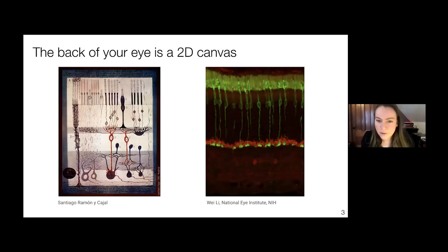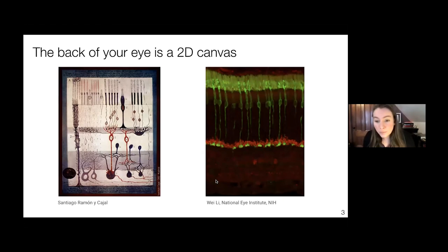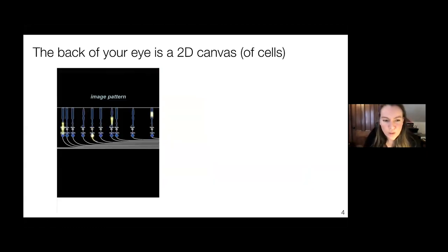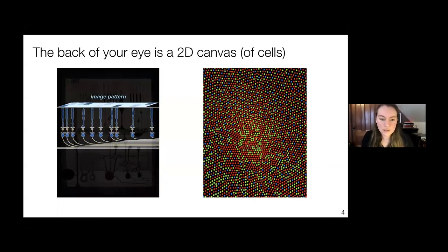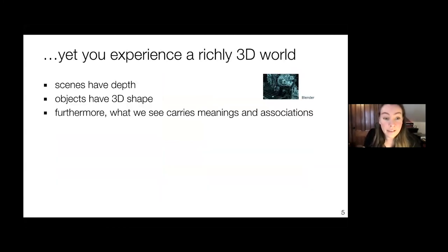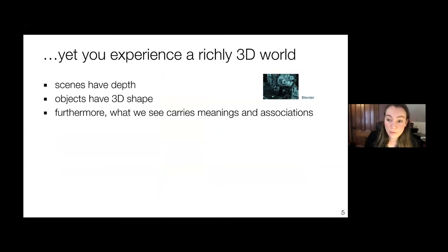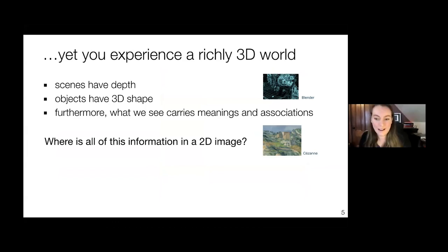The back of your eye is a 2D flat canvas made up of a hierarchy of cells, visualized in art by Ramón y Cajal hundreds of years ago and now via electromagnetic imaging. We can get pretty fine brain detail of the cells that constitute a 2D canvas taking in incoming image data and representing images as patterns of activations via a mosaic of cells. Yet we experience this richly 3D world. So this is the setup of a problem you've probably heard before: 2D canvas, but we have 3D rich experience. Scenes have depth, objects have 3D shape, and furthermore what we see carries many different meanings and associations.